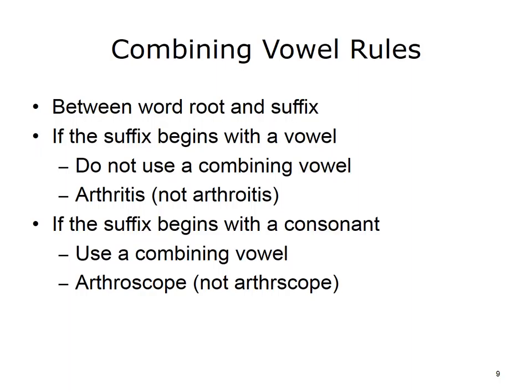If the suffix begins with a consonant, we would use the combining vowel, and we would typically use the combining vowel o. For example, in the word arthroscope, arthro means joint and scope means examine. Since the suffix begins with a consonant, we would add the combining vowel to connect the two parts together to come up with arthroscope.